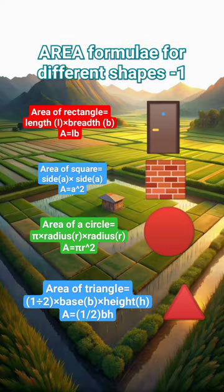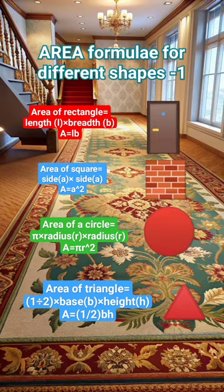Circle. Circle is a round shape. Area of circle equal to pi into radius into radius.